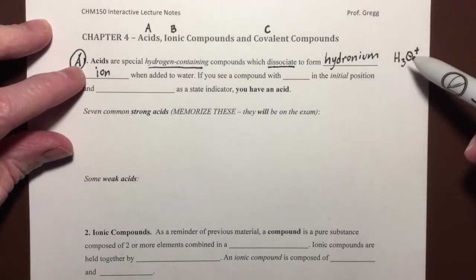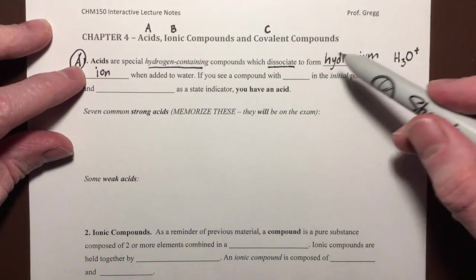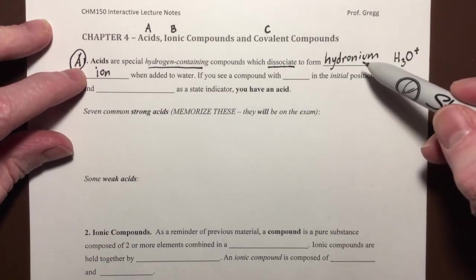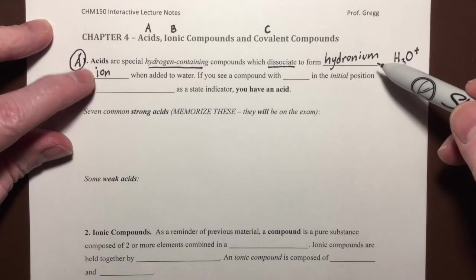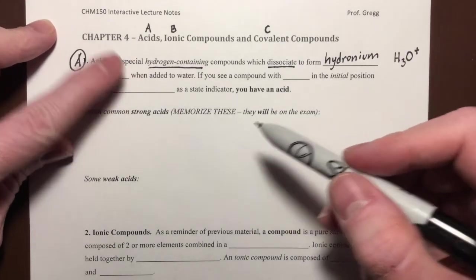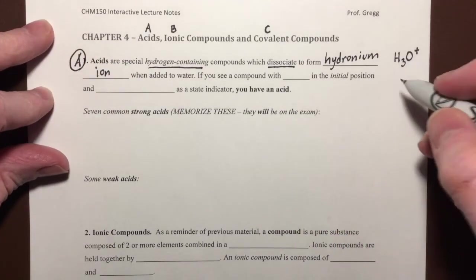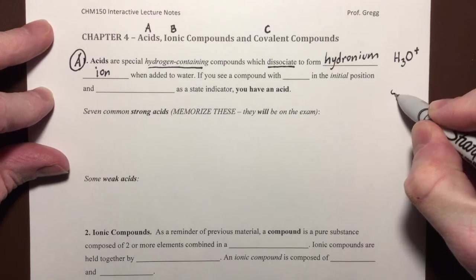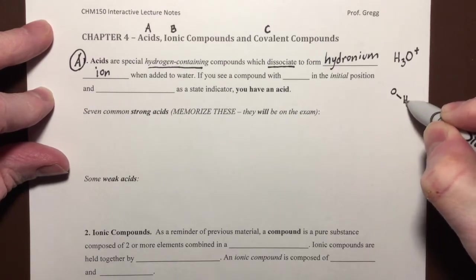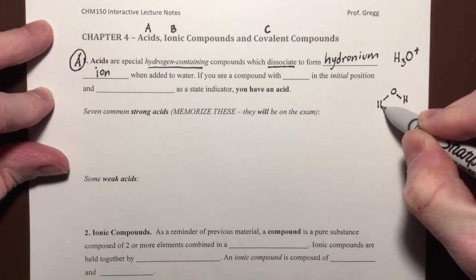So acids are hydrogen containing compounds that dissociate, they break apart, to form hydronium ions when they are added to water. Just as a reminder, this is what a water molecule looks like. It's an oxygen with two hydrogens, it's a bent molecule.